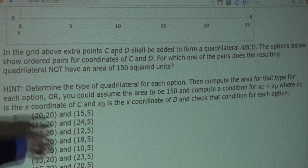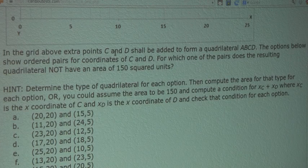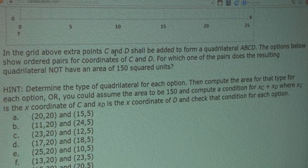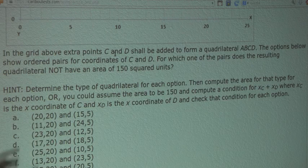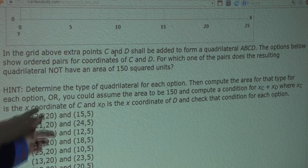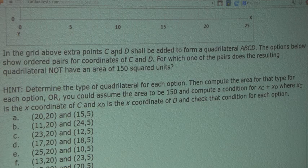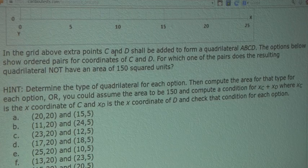Alright, now let's take a look at the options. What we will notice quickly is that the y-coordinate in point C is always 20, and the y-coordinate in point D is always 5.